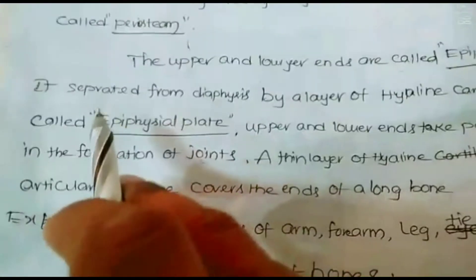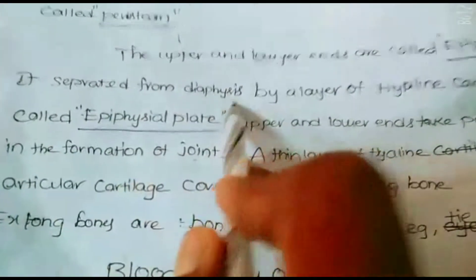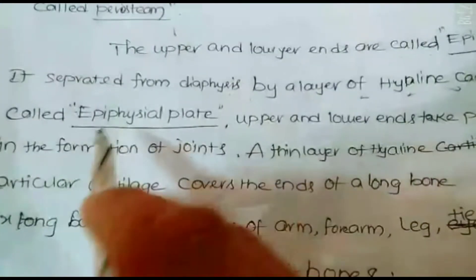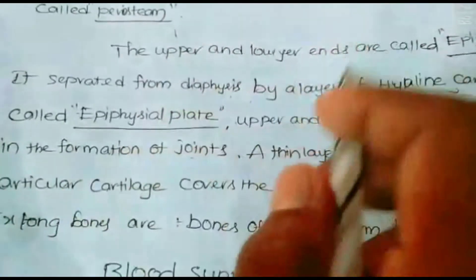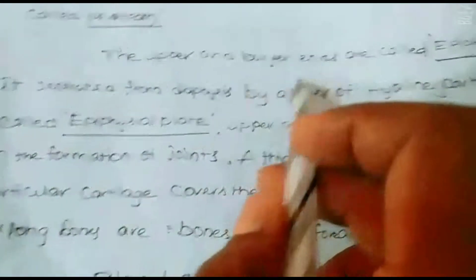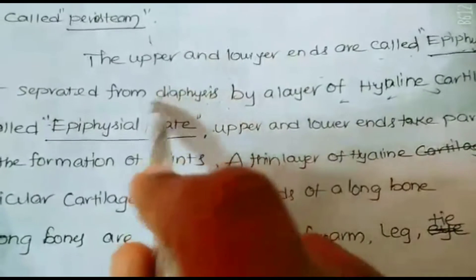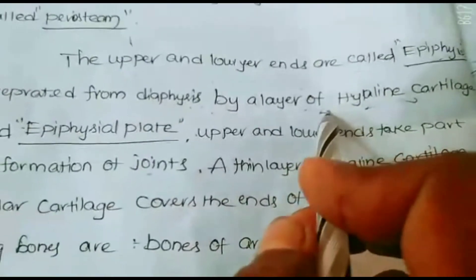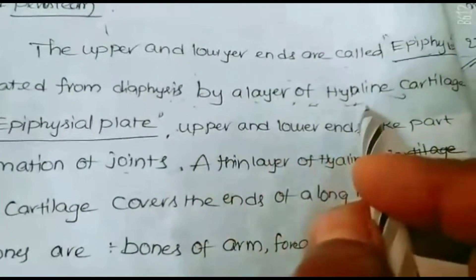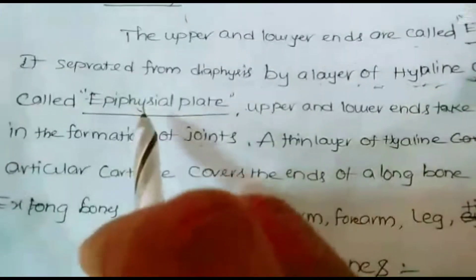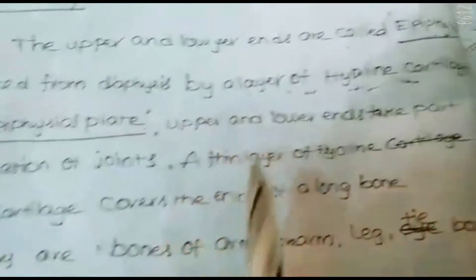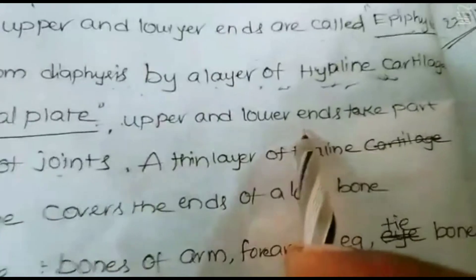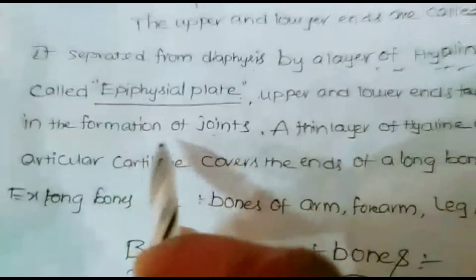The upper and lower ends are called the epiphysis. They are separated from the diaphysis by a layer of hyaline cartilage called the epiphysial plate. The upper and lower ends take part in the formation of joints.